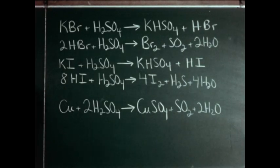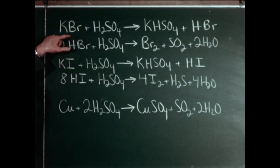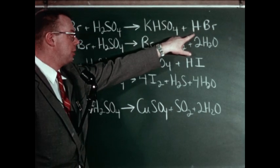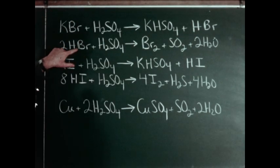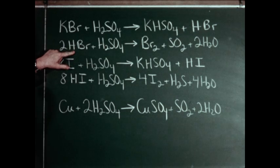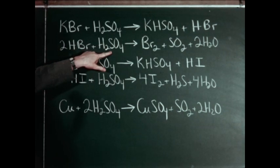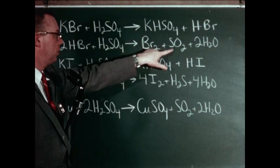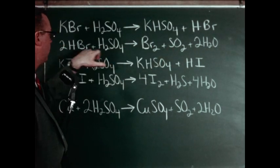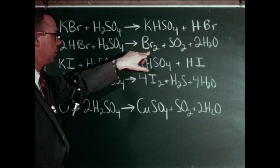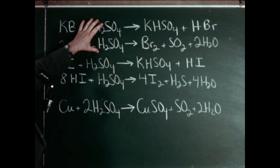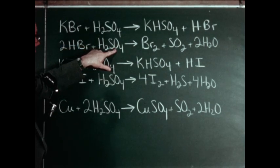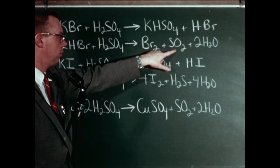When we placed concentrated sulfuric acid on potassium bromide, the first reaction to take place liberated some hydrogen bromide. But this hydrogen bromide reacted, at least in part, with more of the concentrated sulfuric acid, reducing the sulfuric acid to sulfur dioxide, and the HBr was oxidized to bromine. This illustrates sulfuric acid acting as an oxidizing agent when the reduction product is sulfur dioxide.